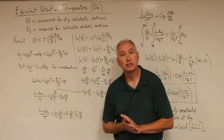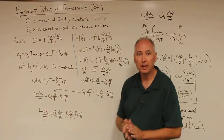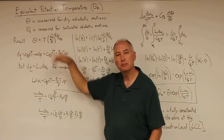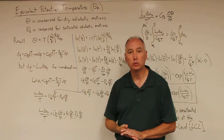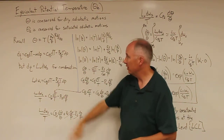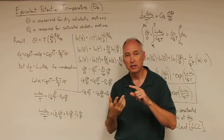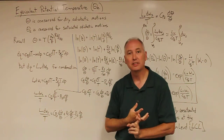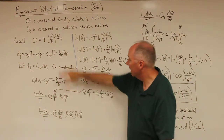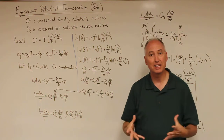In this lecture, we're going to introduce the concept of equivalent potential temperature, theta E. In a previous lecture, we introduced the concept of potential temperature, which was the temperature an air parcel would achieve if moved dry adiabatically to a pressure surface of 1,000 hectopascals. The assumptions were that the air parcel was dry, the atmosphere was hydrostatic, and the process was reversible and adiabatic. Under those conditions, potential temperature is conserved for dry adiabatic motions.